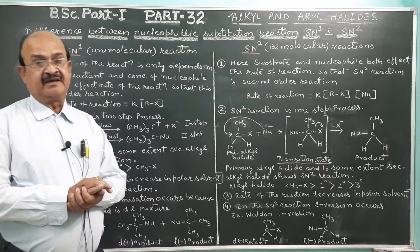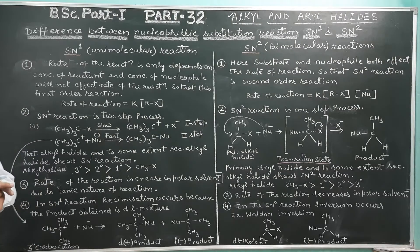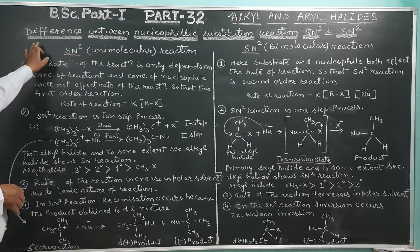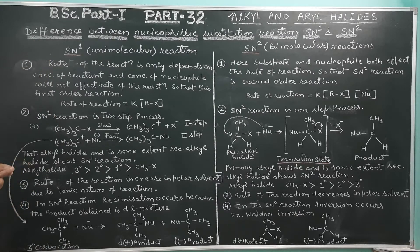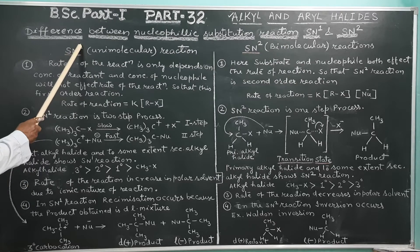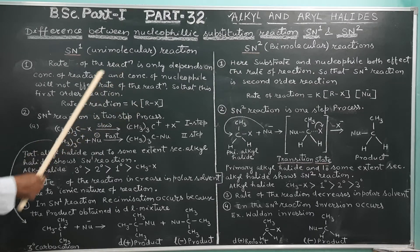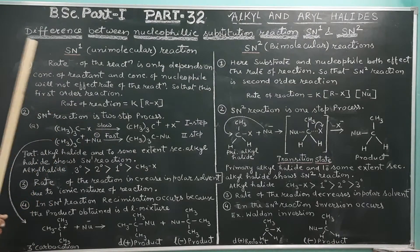We studied earlier about nucleophilic substitution reactions — unimolecular and bimolecular. In this session we are studying the difference between SN1 and SN2 reactions. SN1 is the unimolecular reaction. In SN1, only one reactant affects the rate of reaction, so it is called a unimolecular reaction — only the substrate affects the rate.